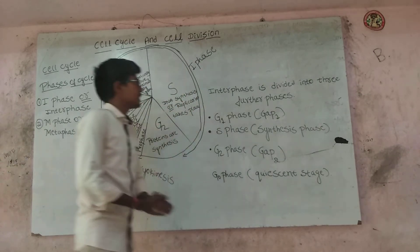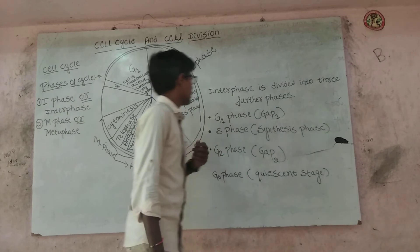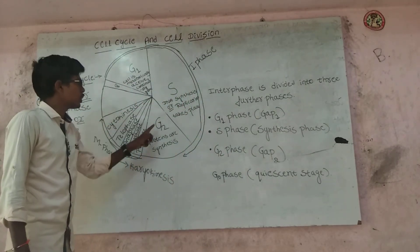Interphase is divided into three further phases: G1 phase, S phase, and G2 phase.